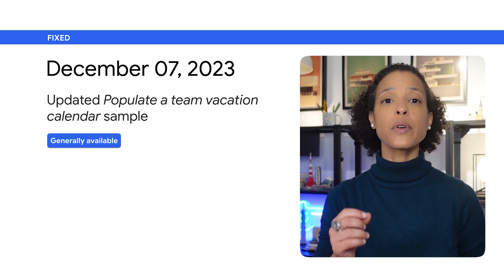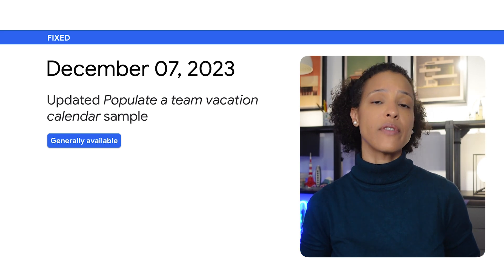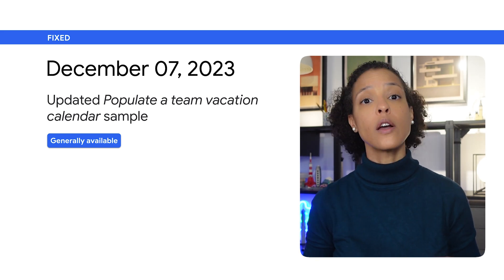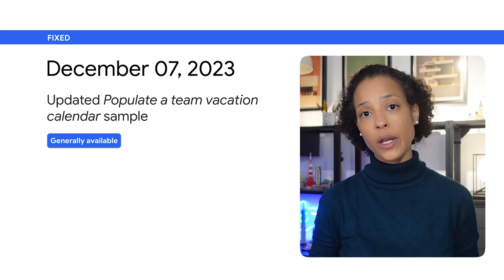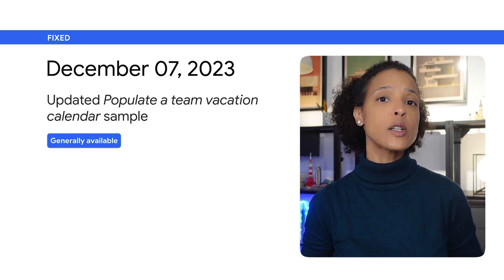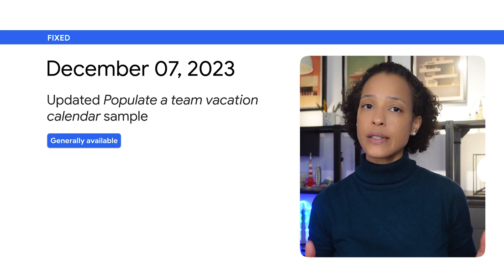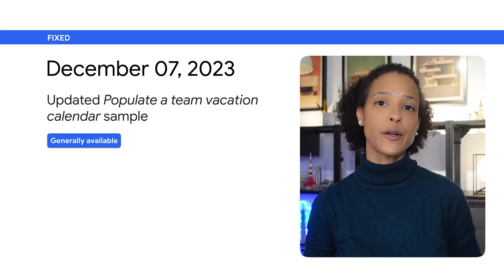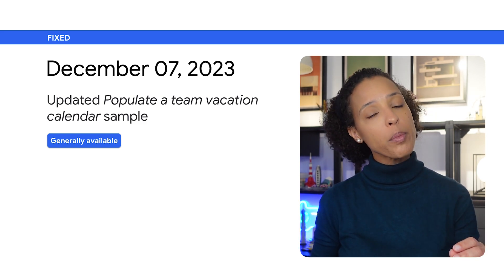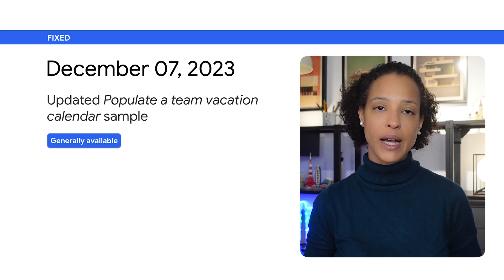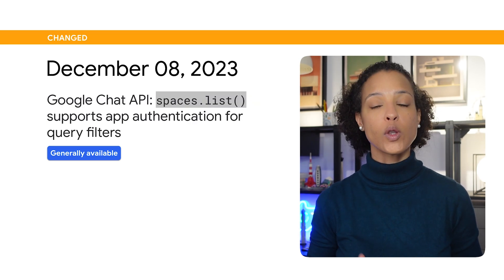To fix a bug that prevented events of event type not equal to default from importing, we updated the code sample in Populate a Teen Vacation Calendar, the popular Apps Script and Calendar API solution.